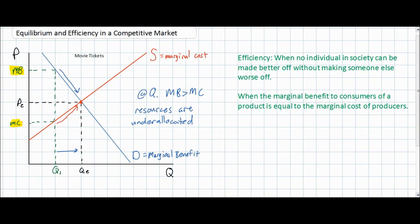Efficiency exists when no individual in society can be made better off without making someone else worse off. If the quantity decreases from QE to Q1, consumer surplus would clearly be lower — the yellow triangle represents consumer surplus at Q1. Producer surplus appears to have increased at Q1, since the price consumers are willing to pay is much higher, represented by marginal benefit. However, this increase in producer surplus comes at the expense of consumer surplus.